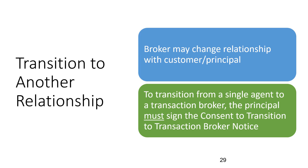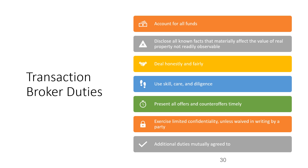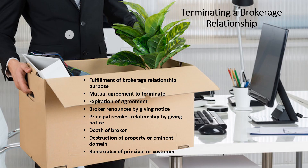The broker may change the relationship with the customer or principal. To transition from a single agent to a transaction broker, the principal must sign the consent to transition to transaction broker notice. Duties of a transaction broker include: account for all funds, disclose material defects, deal honestly and fairly, use skill, care, and diligence, present all offers and counteroffers in a timely manner, exercise limited confidentiality unless waived in writing by a party, and any duties mutually agreed to.